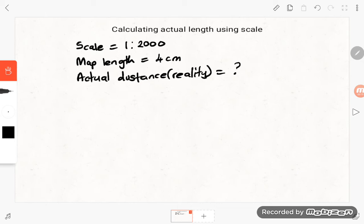So this scale means we are comparing what's happening on the map and what's happening in reality. It means one unit on the map is equal to 2000 units in reality, and then this 2000 is what we call the scale factor.